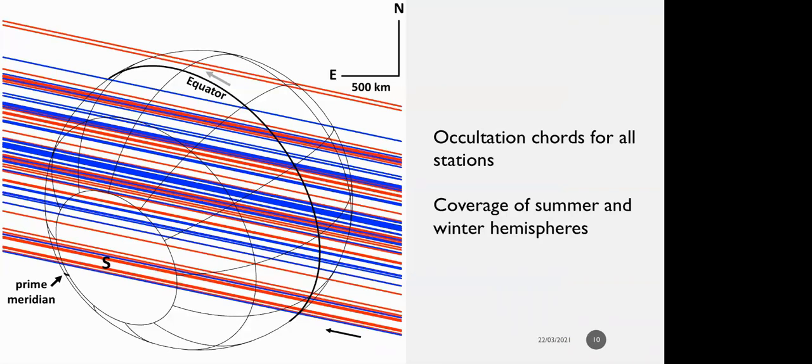Here we have the occultation chords for all positive stations. It spans Triton almost top to bottom, covering both winter and summer hemispheres. The colors are reversed here - red lines are used in the fit and blue are not used in the fit.